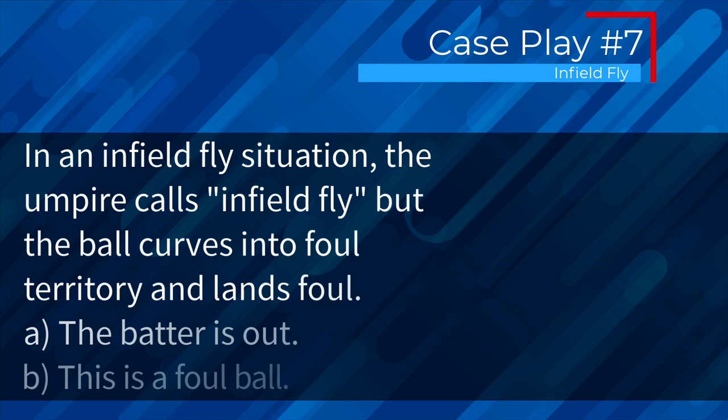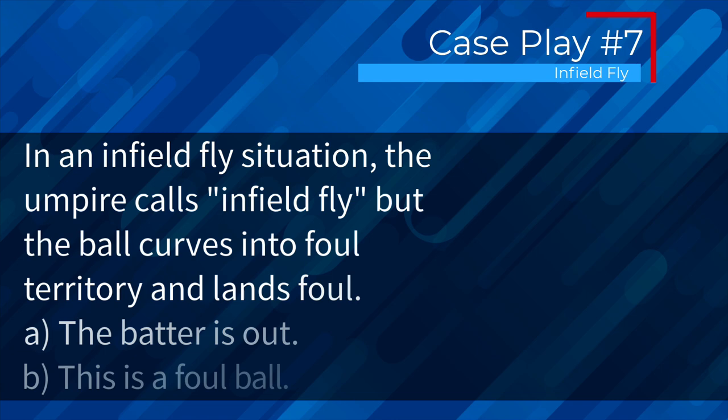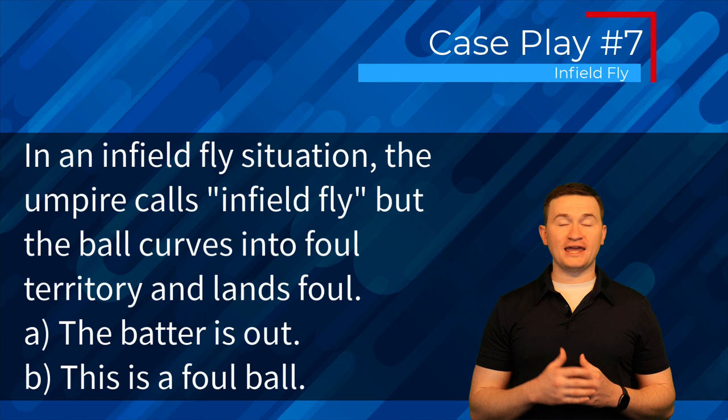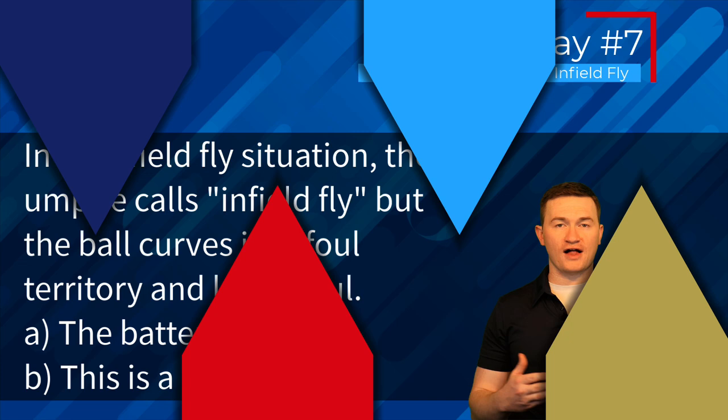Case play seven: in an infield fly situation, the umpire calls 'infield fly' but the ball curves into foul territory and lands foul. Is the batter out, or is this a foul ball? The correct answer is B — this is a foul ball. Remember, a foul ball always supersedes an infield fly.